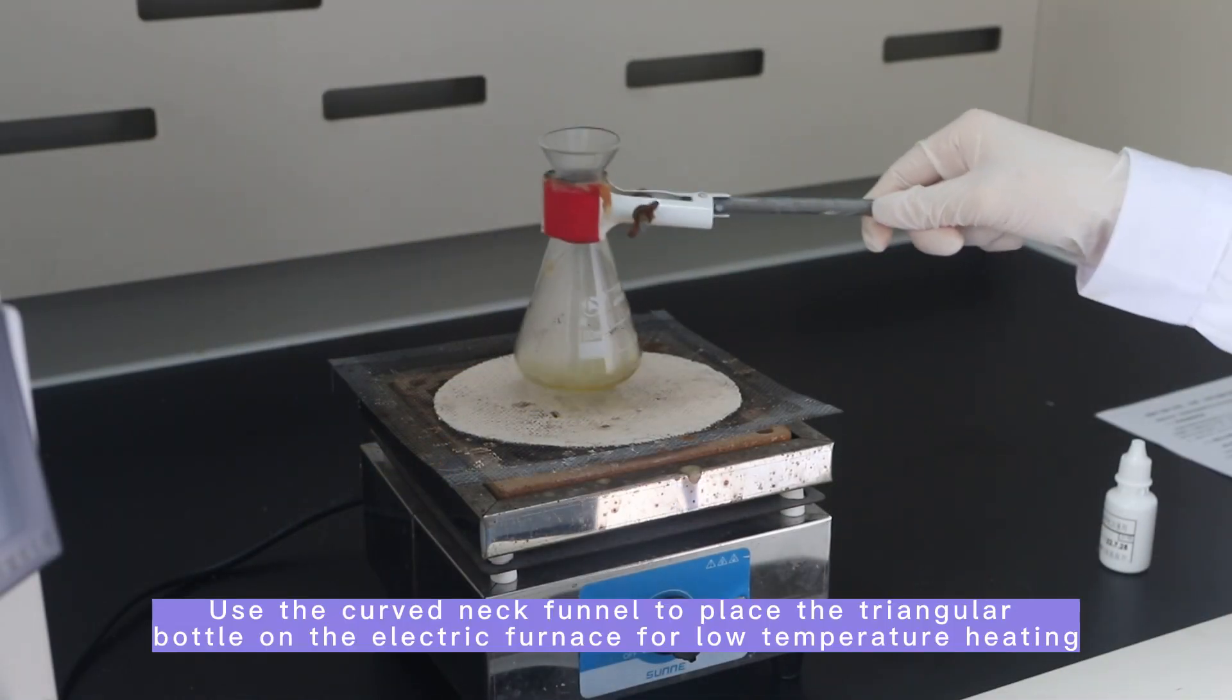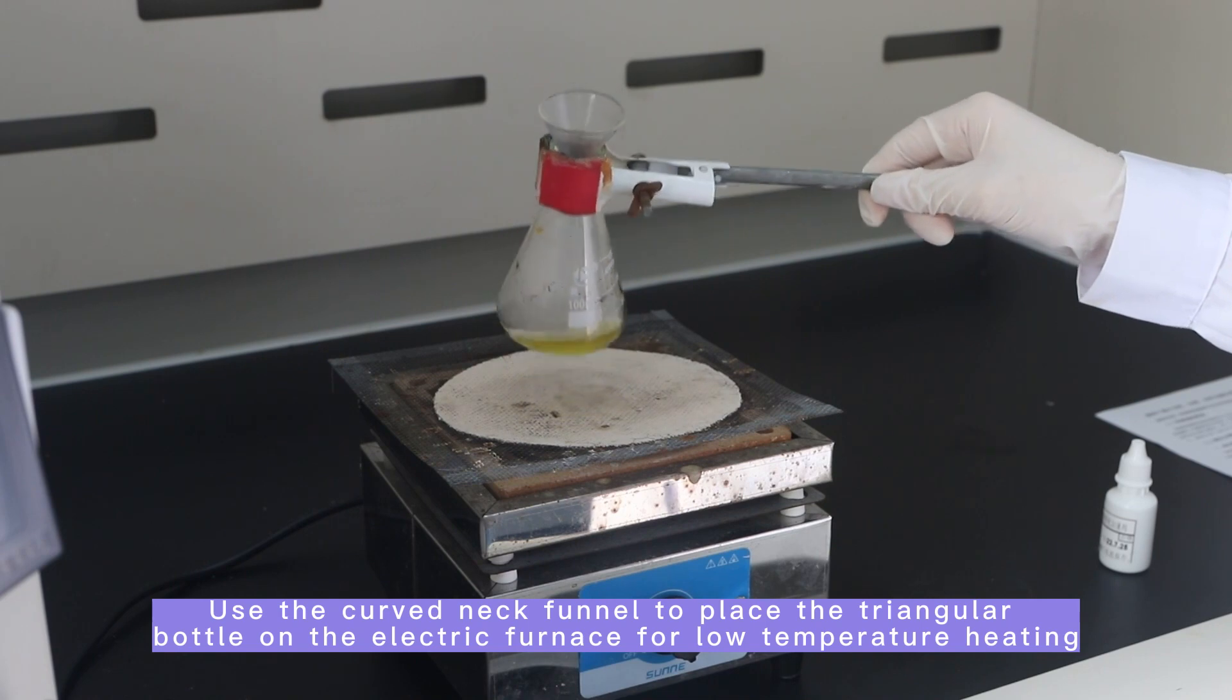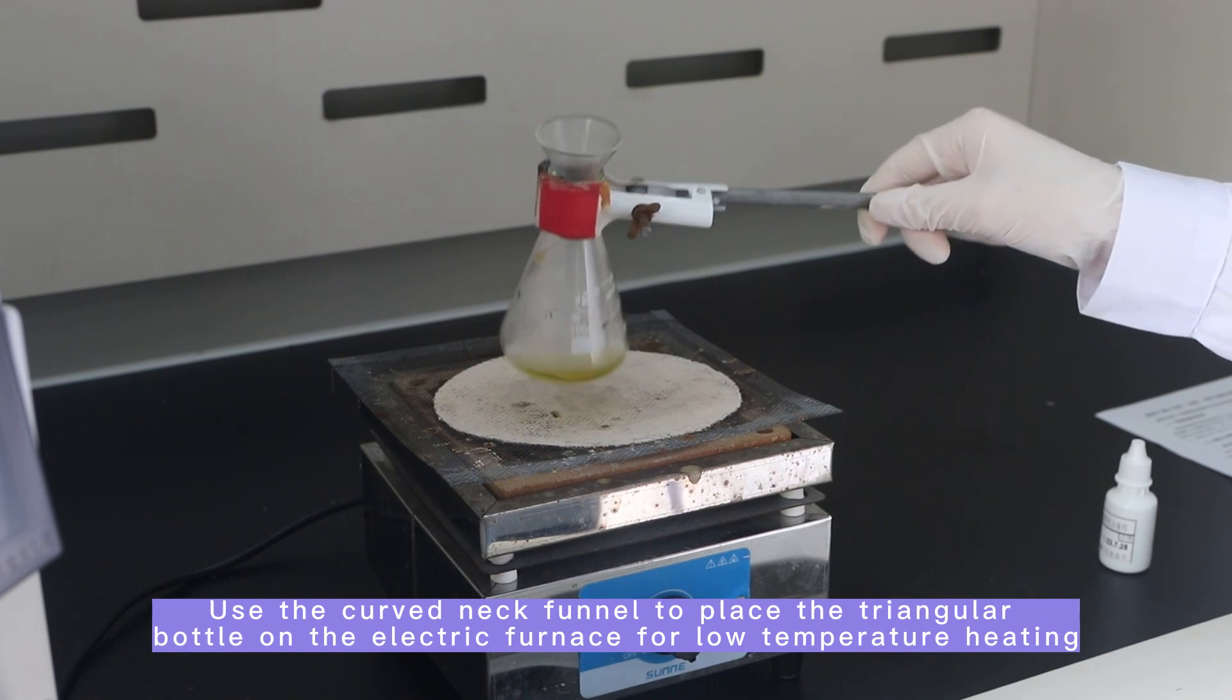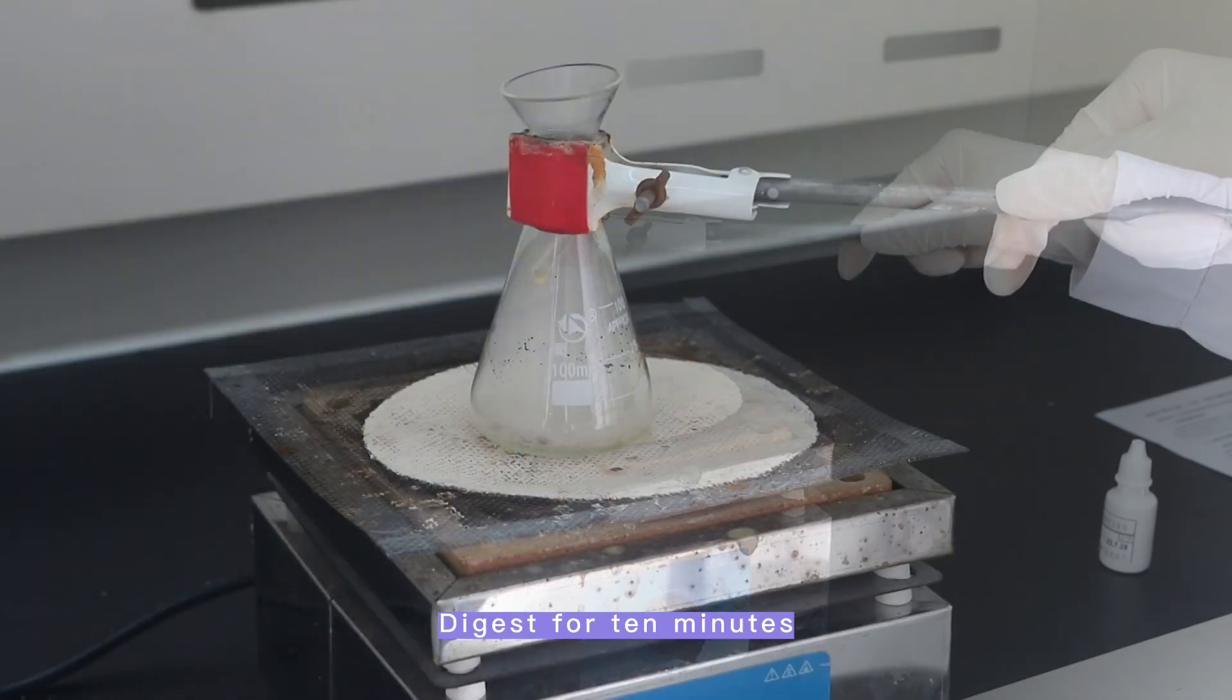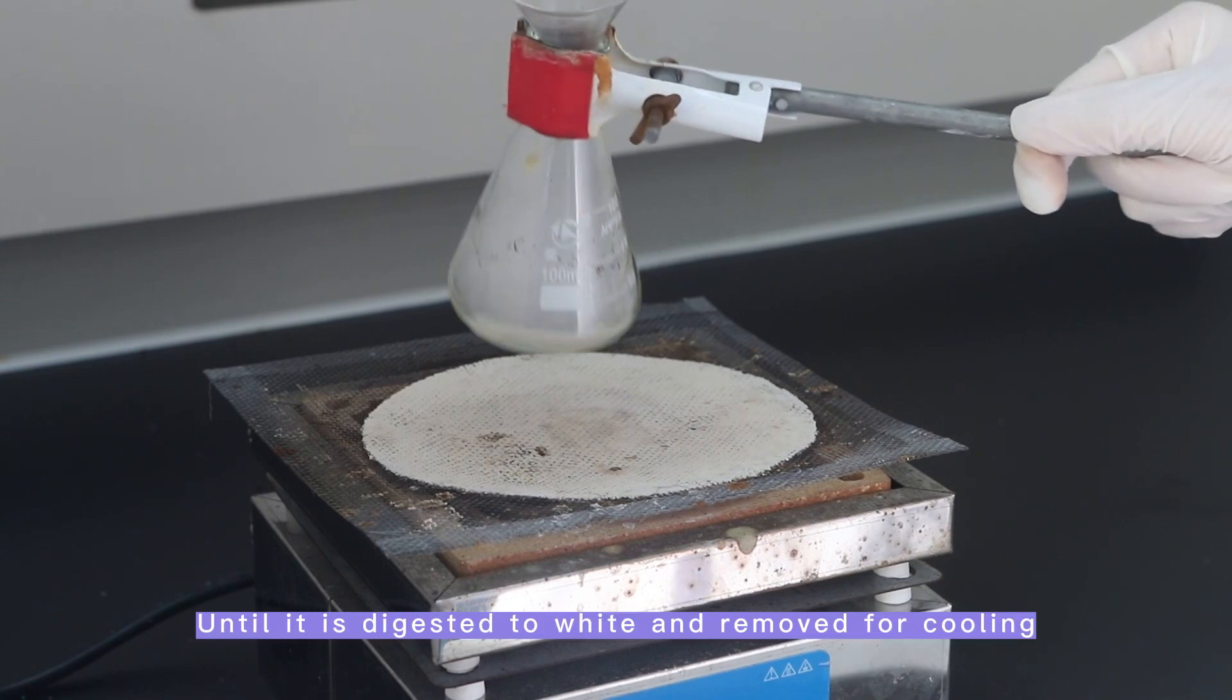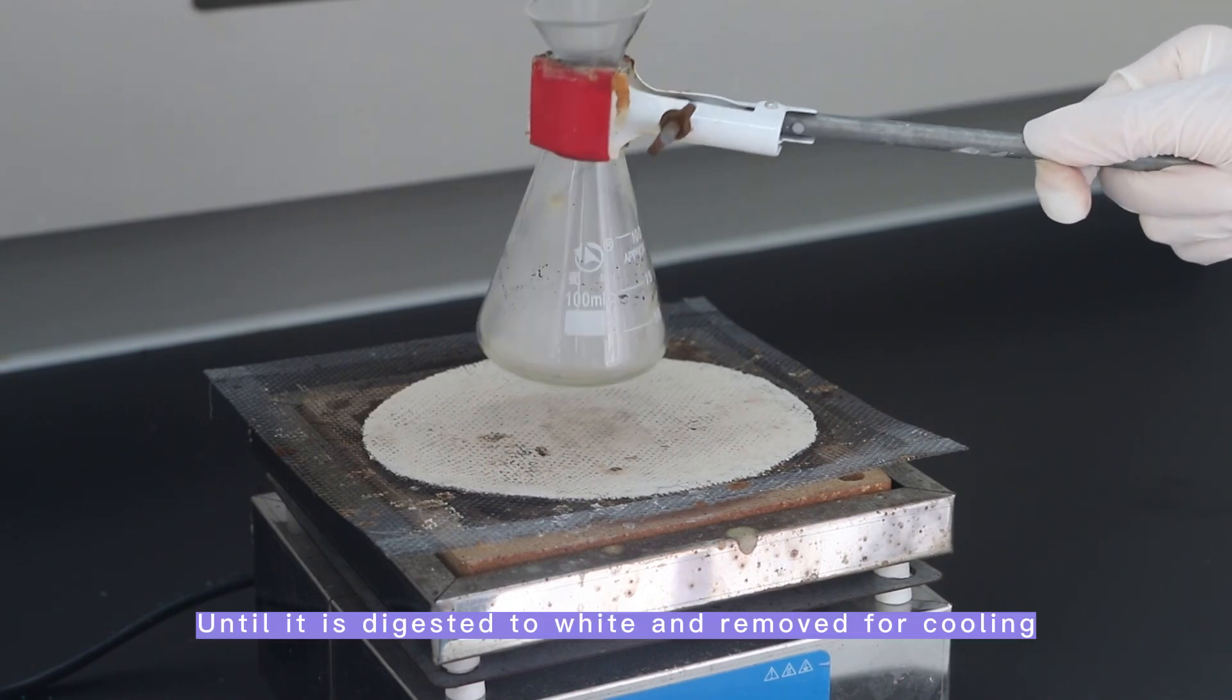Use the curved neck funnel to place the triangular bottle on the electric furnace for low temperature heating. Digest for 10 minutes until it is digested to white and removed for cooling.